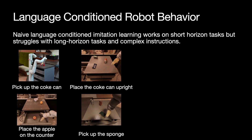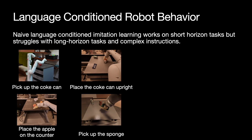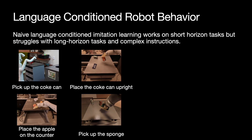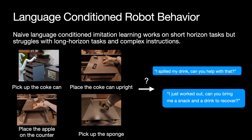As an alternative, we can condition robotic learning policies on natural language instructions, but it only works on short horizon commands and struggles with abstract, temporally extended tasks and more complex instructions. It's unclear how we can take such instructions and translate them to robotic behaviors.